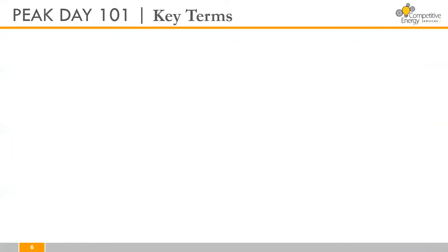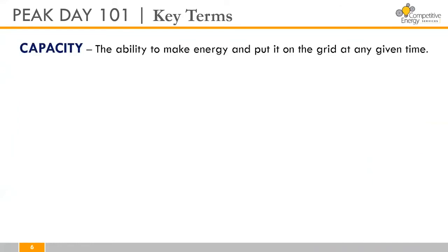Let's walk through some of the key terms we'll be using today. The first is capacity — the ability to make energy and put it on the grid at any given time. Most days throughout the year ISO New England has enough capacity to meet demand without any issues, but there are a handful of days, particularly during the summer, when ISO New England needs to call on additional generation to meet demand on the grid. We call these peak days, and having that capacity to meet demand on those peak days is necessary for a reliable grid.